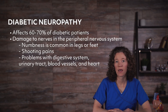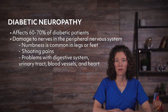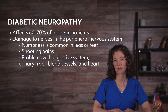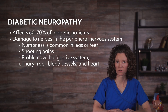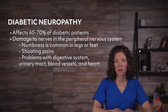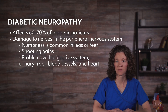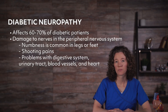Diabetic neuropathy affects 60 to 70 percent of diabetic patients and involves damage to nerves in the peripheral nervous system. The most common symptoms involve numbness in the legs or feet, but depending on the nerves affected, it can also cause shooting pains, problems with the digestive system, urinary tract, blood vessels, and the heart. Microvascular disease may also impair skin healing so that even minor breaks in skin can develop into major infection and deep ulcers, especially in the lower extremities.